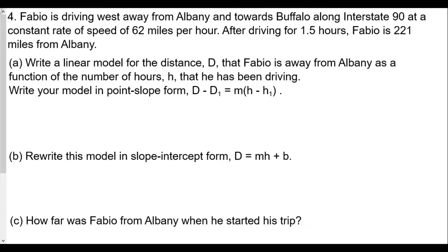We take a look at this, and usually in this form called the point-slope form, we're looking for a slope as well as a coordinate. Now we know after 1.5 hours he is 221 miles away from Albany, and so that means in this case we have a coordinate of 1.5 as the h value and the D value of 221. So that's our coordinate, and that'll be in this case our h₁ and this D₁ in the formula.